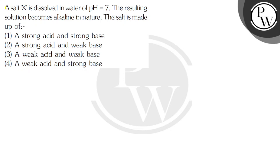Hello, let's see the question. It says a salt X is dissolved in water of pH equal to 7. The resulting solution becomes alkaline in nature. The salt is made up of: